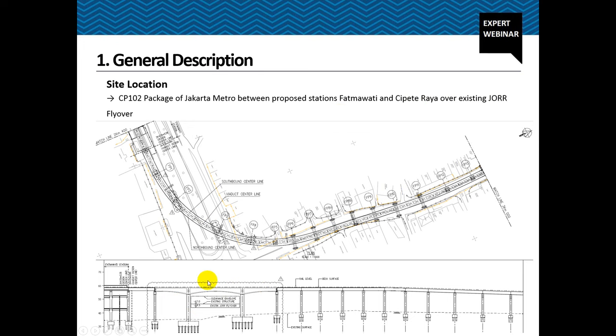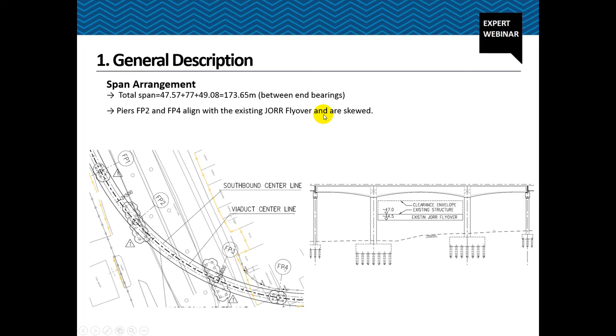That's the span arrangement. We have three spans typically 47, 77 and 49 meters between the end bearings. The piers FP1 to FP4, the piers that we are talking about. FP2 and FP3, the two intermediate piers are in alignment with the flyover itself. So they are highly skewed with respect to the superstructure and they are monolithic at the same time.